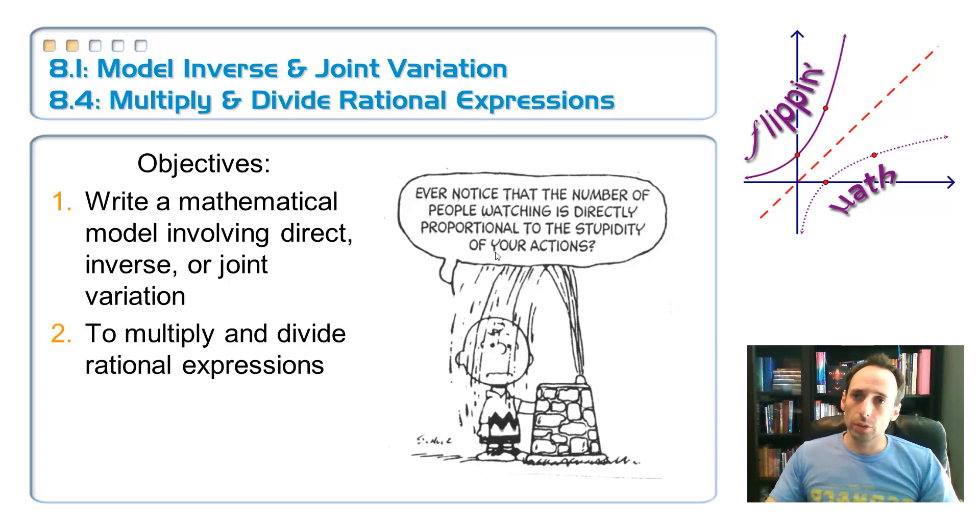So that concludes our lesson. Jam-packed lesson. Lots of stuff in here. Direct and inverse and joint variation for that first objective. And then for the second one, talking about something completely unrelated. I don't know, that's just the way we do it here, where we're simplifying multiplication and division problems involving algebraic expressions.